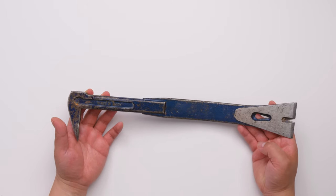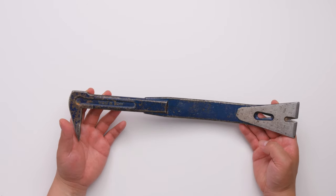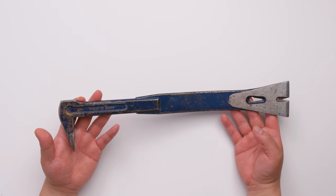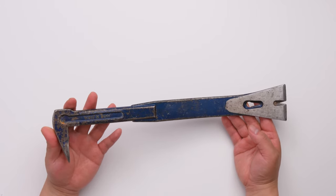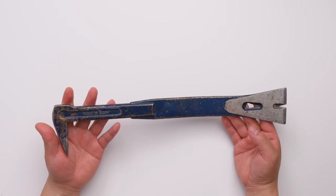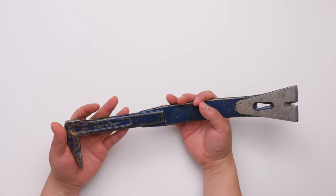This is Estwing Pro-Claw roofing siding bar. This is a very good tool for roofing and siding, but most of the time I don't use it for that. I'm not a roofer or doing siding, but most of my job is doing renovations.